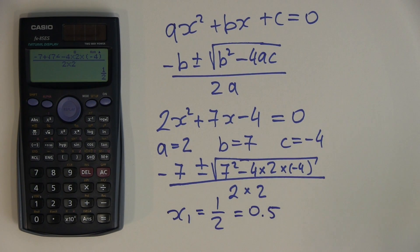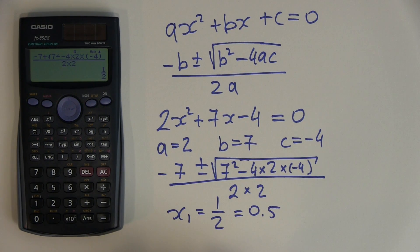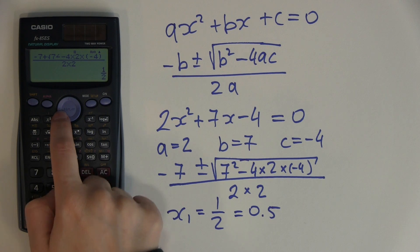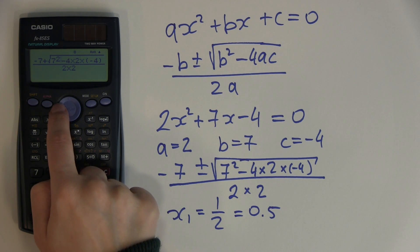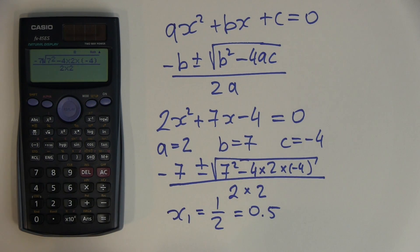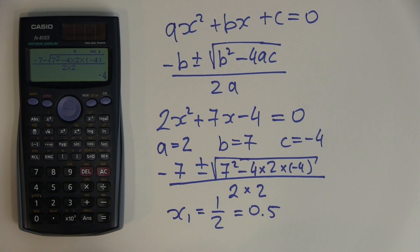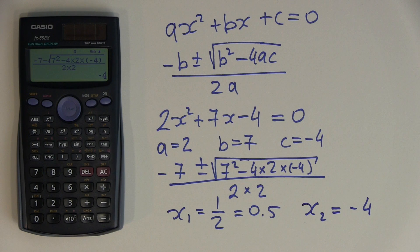For the second root, instead of retyping everything, I use the arrow button to go back in front of the root sign, use the delete button to delete the plus and replace it with a minus, then hit equal again. This gives x₂ = −4, in much less time than retyping the whole expression.